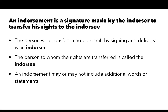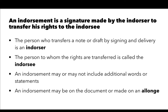Words and statements added to an endorsement — things like 'for deposit only' or 'for deposit to a certain bank account number' — may or may not affect the validity of the endorsement. An endorsement may be made on the document itself or on what's called an allonge — simply a piece of paper attached to the document — usually done when you've run out of room on the instrument itself for further endorsements.